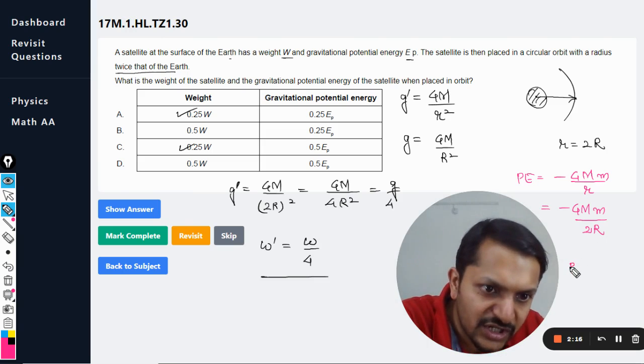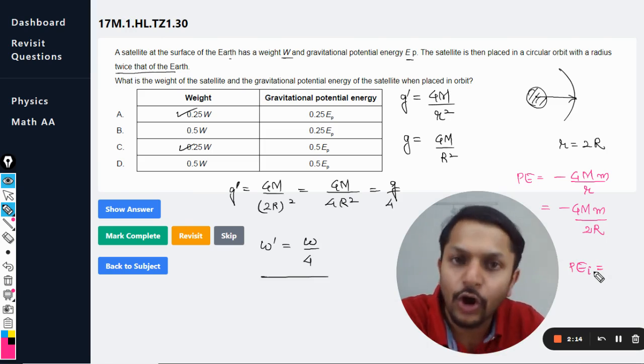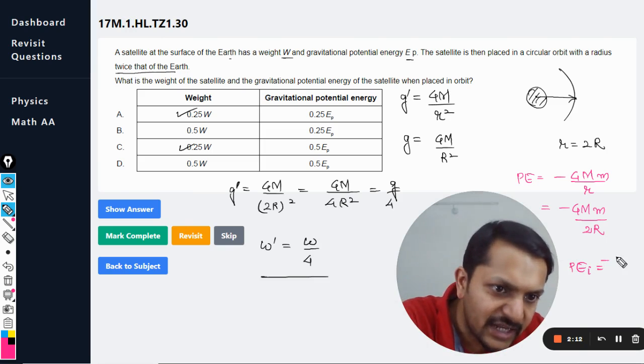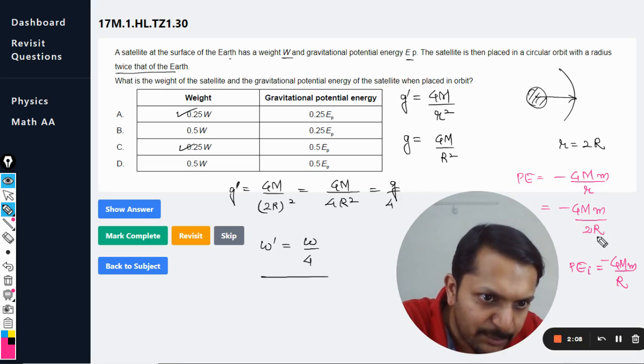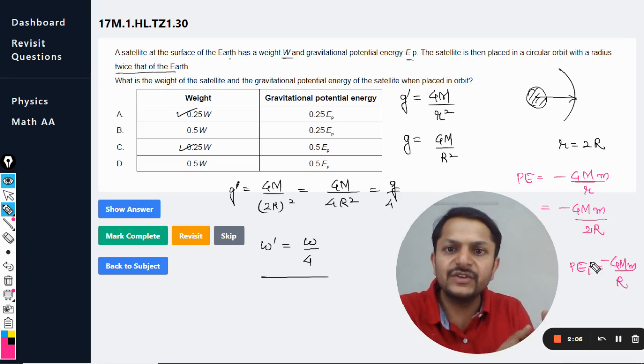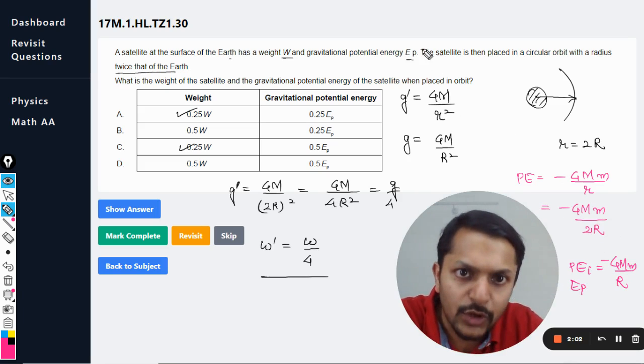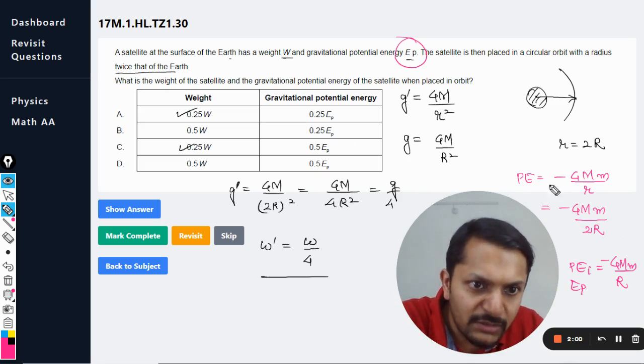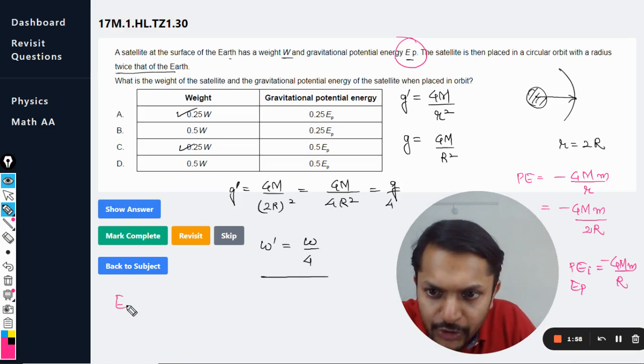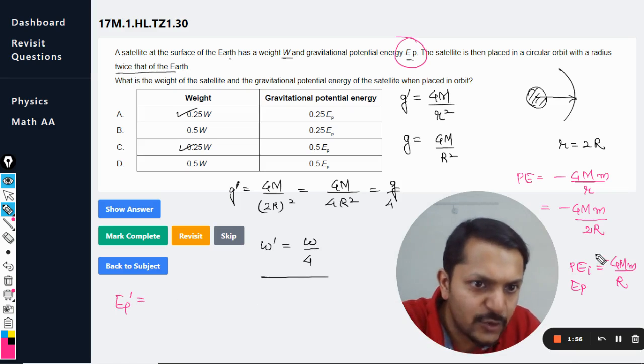But what was the initial potential energy when it was standing on the surface of the earth? At that time it is minus GMm divided by R. So this complete term can be replaced with the Ep, like this is written as Ep according to our question. So it only means that Ep final or Ep dash is equal to minus GMm divided by 2R.